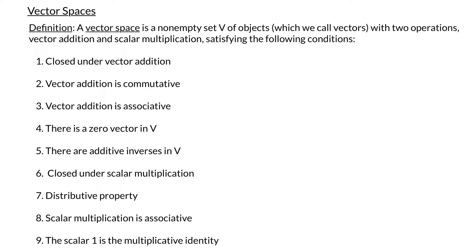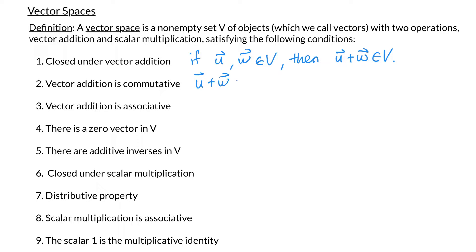The first condition is closed under vector addition. This means that if I have any two vectors in my set V, let's call them u and w, then their sum u plus w is also in my set V. Property 2 says vector addition is commutative. That means it doesn't matter which order I add things in, so u plus w is the same as w plus u for any choice of u and w in my set V.